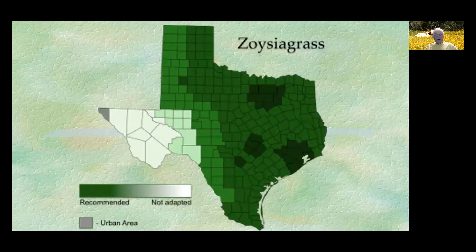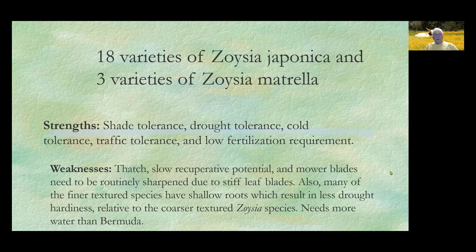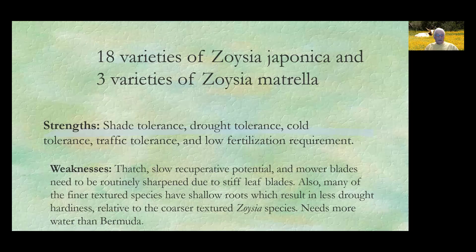Let's look at Zoysia grass, which is recommended for our area — you can see Williamson County on the map. There are 18 varieties of Zoysia japonica and three varieties of Zoysia matrella. Zoysia grass strengths include shade tolerance, drought tolerance, cold tolerance, traffic tolerance, and low fertilization requirements. Weaknesses include thatch buildup, low recuperative potential, and blades need to be routinely sharpened due to the stiff leaf blades. Many finer-textured species have shallow roots, resulting in less drought tolerance relative to coarser-textured ones.